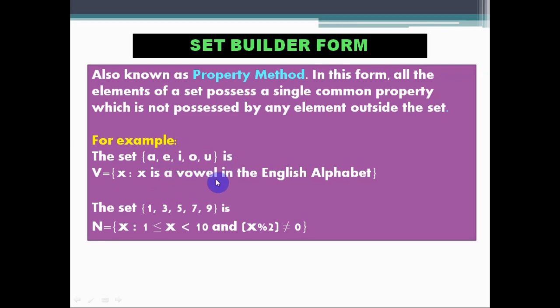Let's take another example. Here we have another set. Elements of this set are 1, 3, 5, 7, 9. So we can write this set in set builder form as capital N equals to {x such that x is greater than or equal to 1, also less than 10, and x mod 2 not equal to 0}.